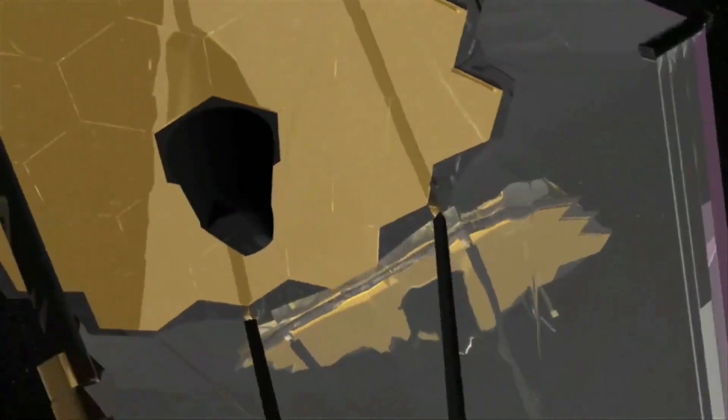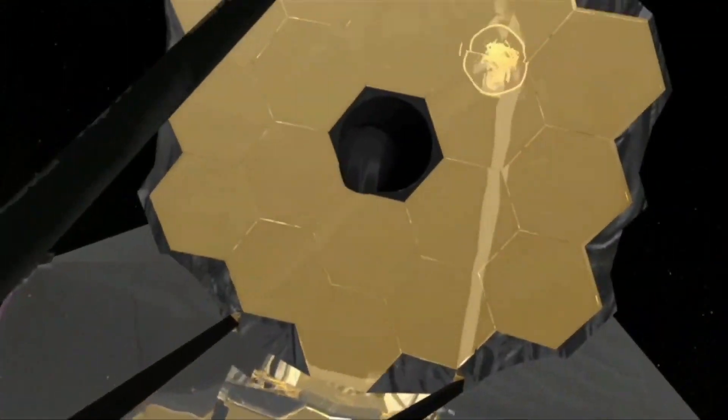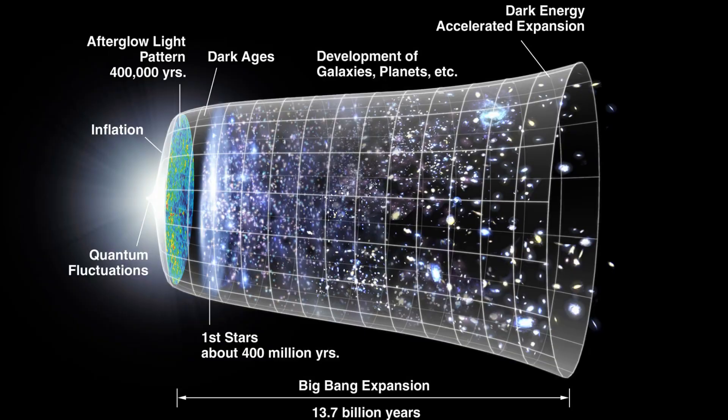According to some calculations, Webb might observe objects 120 million years after the Big Bang with a redshift of 26. If accurate, it would be a significant development in astronomy.